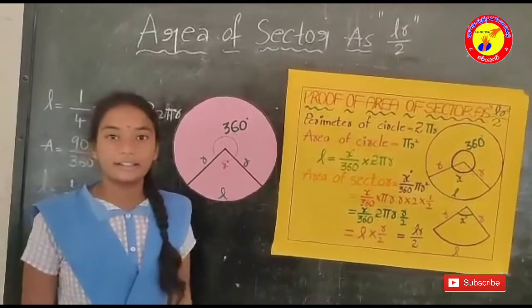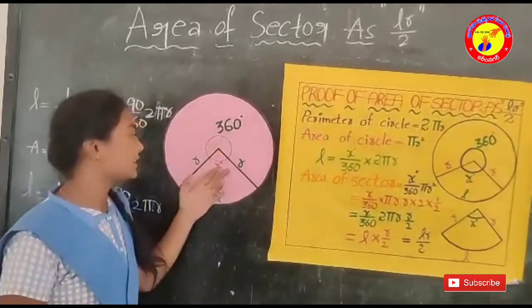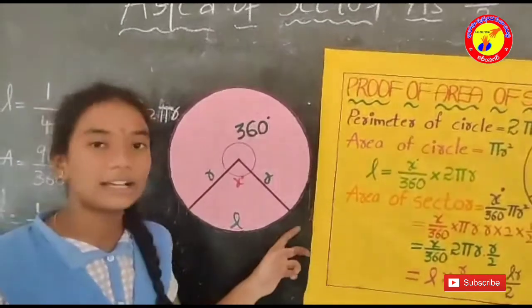So what is a sector? A sector is a part of the circle with two radius and one arc adjoining them.